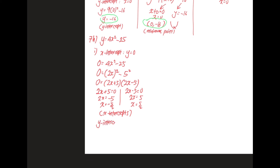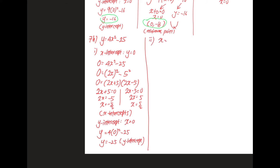For the y-intercept, we let x equal to zero and substitute into the original function, giving y equal to negative 25. This is the y-intercept. For the axis of symmetry, using x equal to minus b over 2a: a is 4, b is 0 because the x term is missing, c is minus 25. So x equals minus 0 over 2 times 4, which equals 0. The axis of symmetry is x equal to zero.